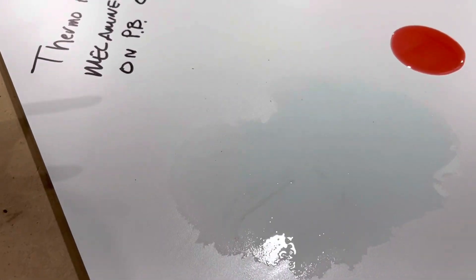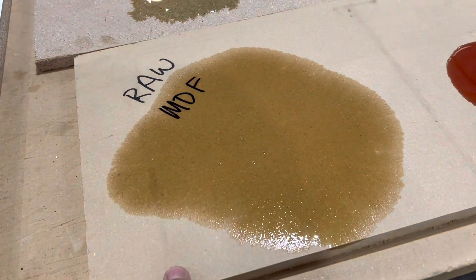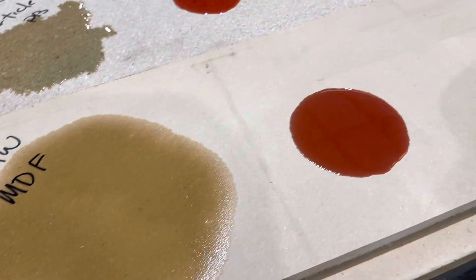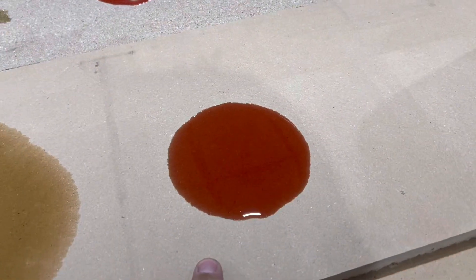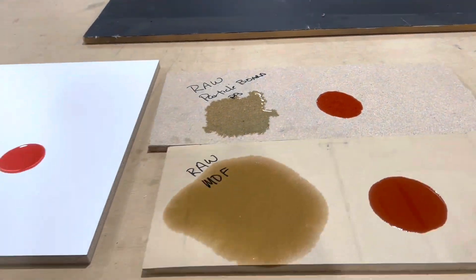And we'll come back in the morning and see how they look. There you have it. So on the melamine, we've got a pretty good puddle of Windex, a little bit of transmission fluid. Same thing on the MDF, already soaking in. And then the transmission fluid, and then on the particle board, the same thing. So we'll check back in the morning and see how it looks.